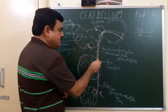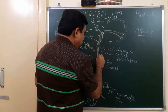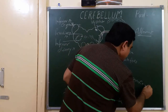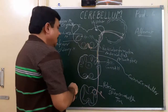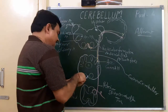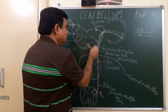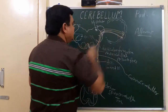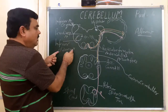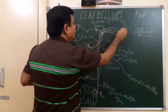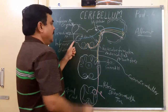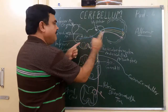These are cuneocerebral fibers. Here are the anterior external arcuate fibers — these anterior external arcuate fibers also pass through. Here is the inferior olivary nucleus; these fibers are going towards the opposite side — these are olivocerebral fibers.